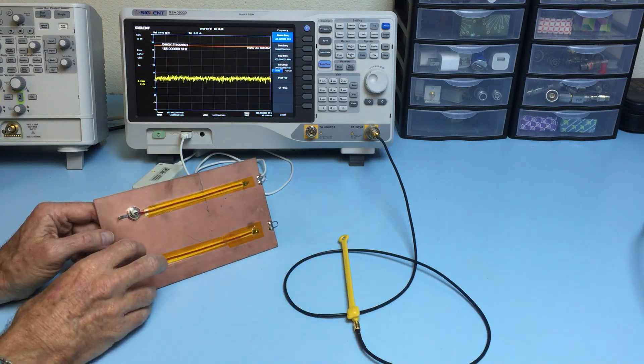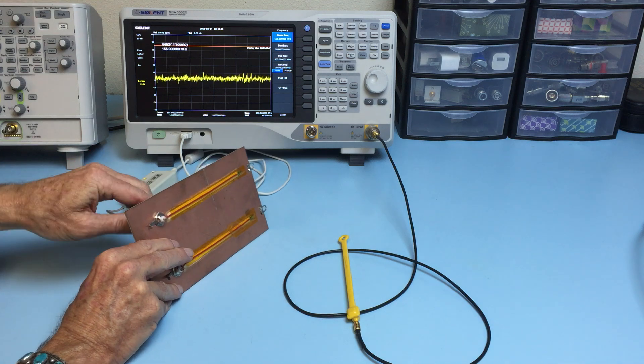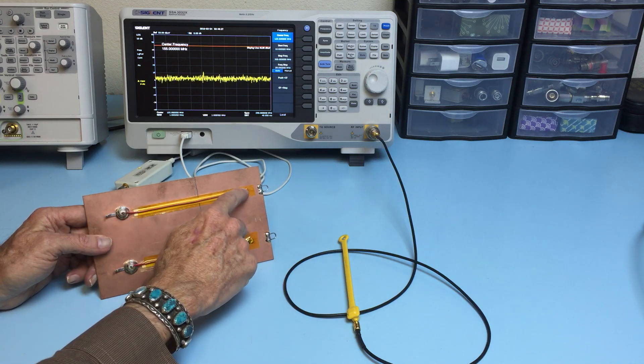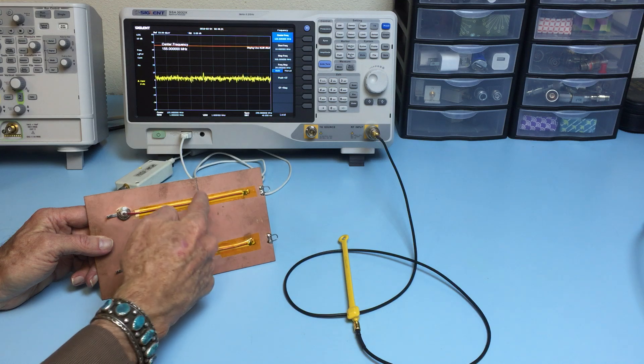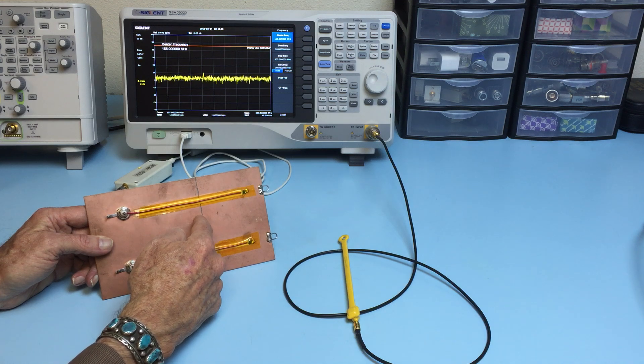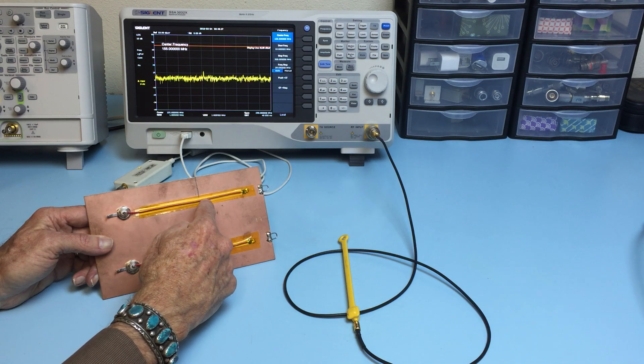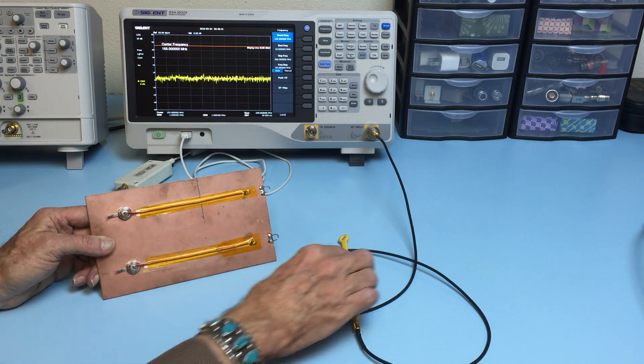So what happens when we now drive the gapped trace? So now we're driving current out to this resistor but the return current now has this gap in the way. And we'll see in a moment that the return current is forced out away around this gap back to the source.